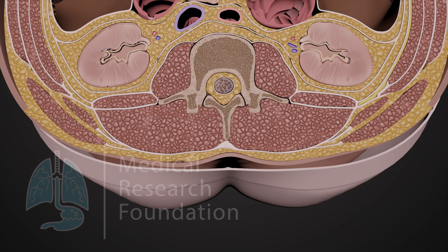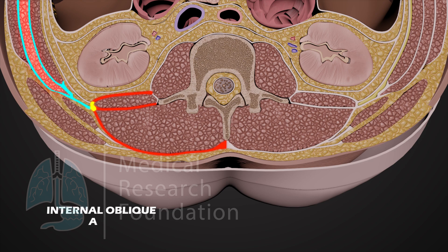The three layers fuse laterally to form a dense aponeurotic sheet, which gives origin to the internal oblique and transversus abdominis muscles.